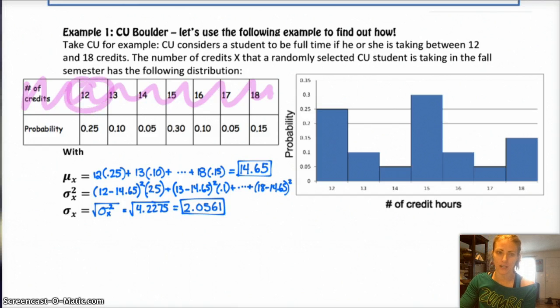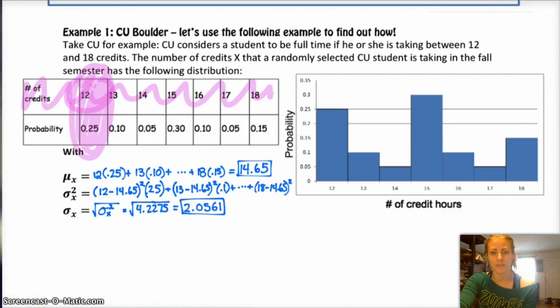And then, you know, you still only have 25% of people taking 12 credit hours, therefore spending that much money. Okay? So, the following would be the distribution, right? Where this 3,000 was the 12 credit hours times $250, okay? And then, you know, 13 credit hours times $250, et cetera, okay?